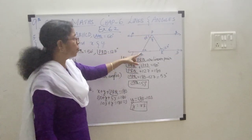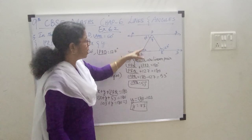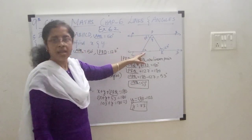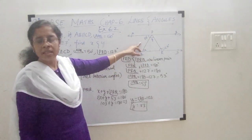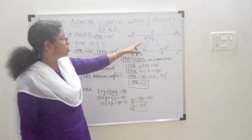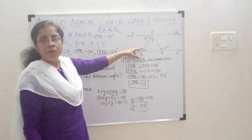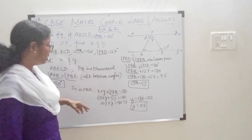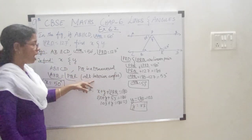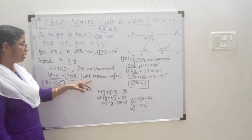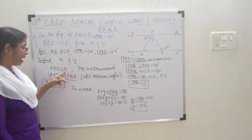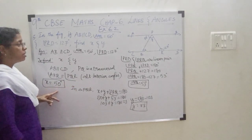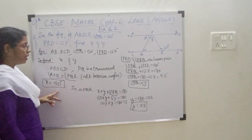So, angle APQ and angle PQR — this X — APQ is 50 and X. What type of angles are they? Those two angles are alternate interior angles. Since the lines are parallel, alternate interior angles are equal. So, X is equal to 50 degrees.